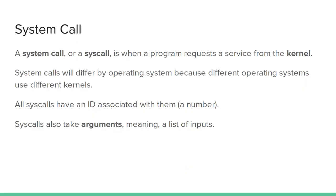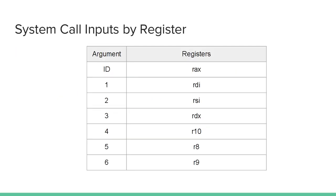Now we're going to look at a system call. A system call, or syscall, is when a program requests a service from the kernel. System calls will differ by operating system because different operating systems use different kernels. All syscalls have an ID associated with them, which is just a number. Syscalls also take arguments, meaning a list of inputs. This is a very important table to try to remember. When you use a syscall, it has a number of inputs, and the inputs are based on the values stored in your registers. The ID for the syscall is in your RAX register.